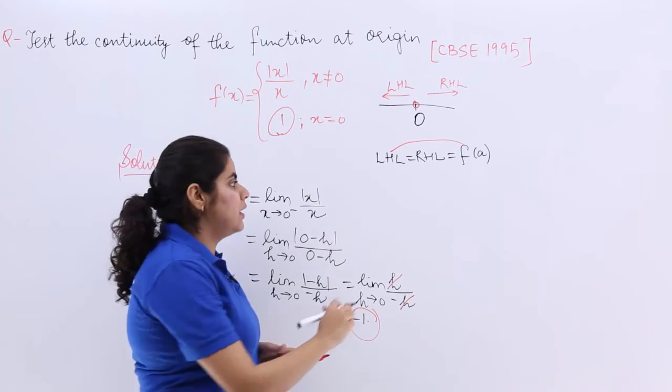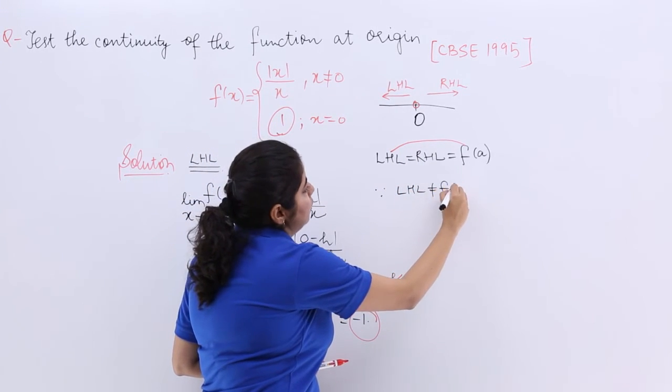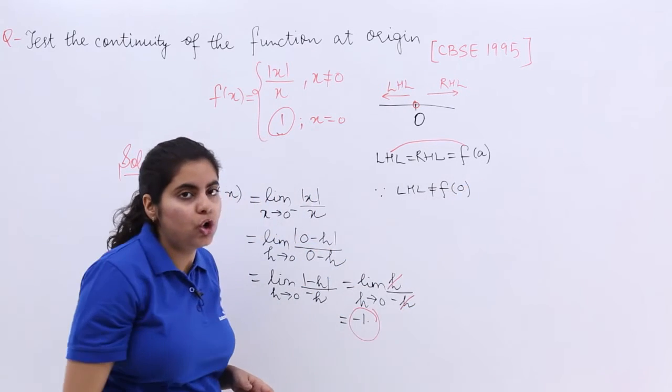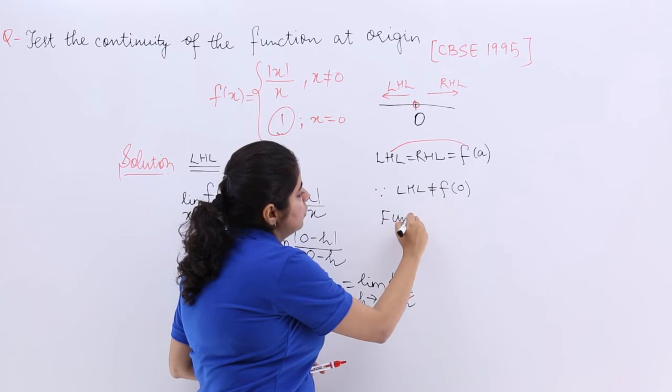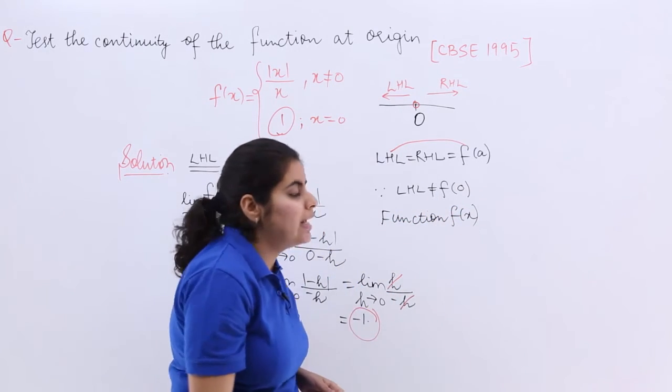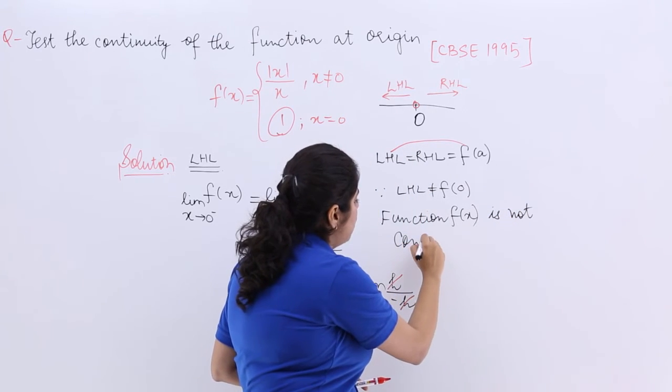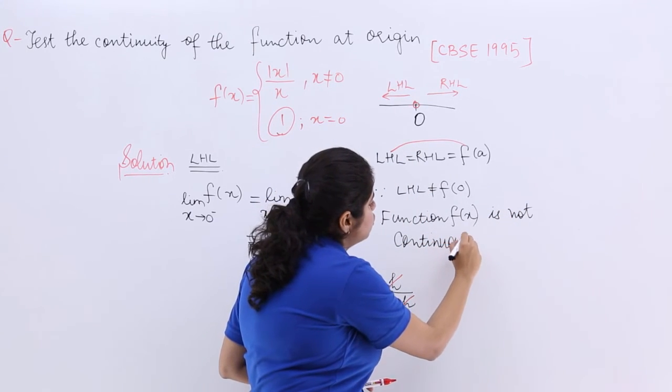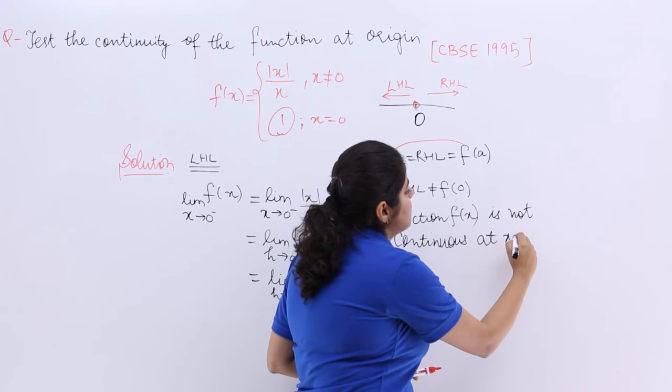So straight away I can say since LHL is not equal to f of 0, that means my function f(x) is not continuous, it is not continuous because we were supposed to check continuity. So it is not continuous at x is equal to 0.